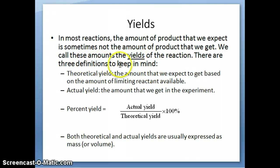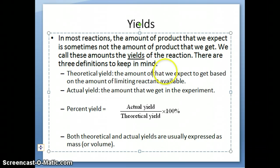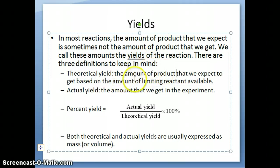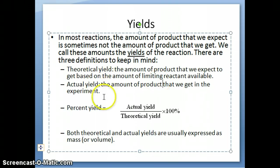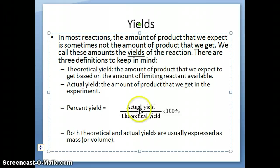There are three different related definitions for yield. Theoretical yield is exactly what it sounds like — it's the amount of product that we expect to get based on the amount of limiting reactant that is available. Actual yield is the amount of product that you actually get in your experiment. These two numbers in theory should be the same, but they might not be for various reasons. Percent yield is then a calculation of how close your actual yield is to the theoretical yield — you take the actual yield, divide it by the theoretical yield, and multiply by 100 percent.